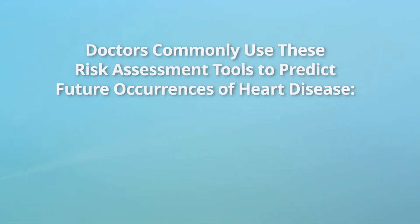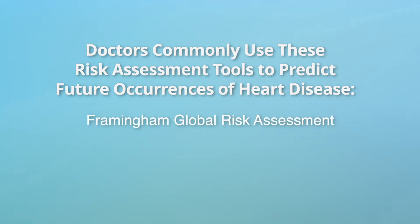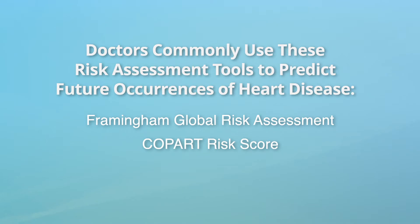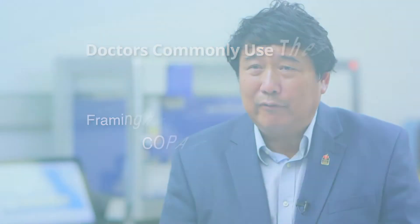The standard of care in assessing a person's risk of developing future cardiac disease is usually to use these global risk assessment or scoring tools, such as the Framingham risk score or pooled cohort risk score, which involves a series of inputs such as knowing the person's age or sex.